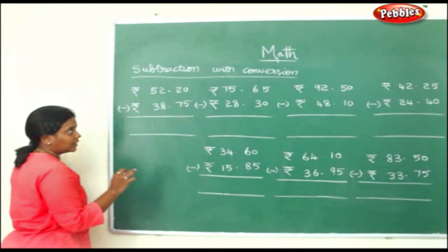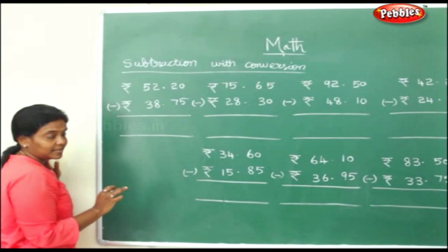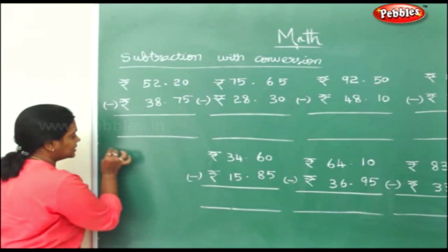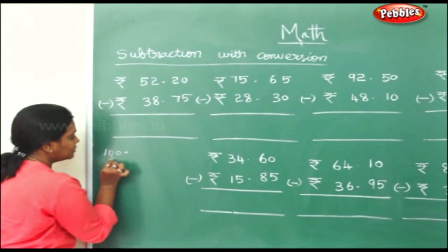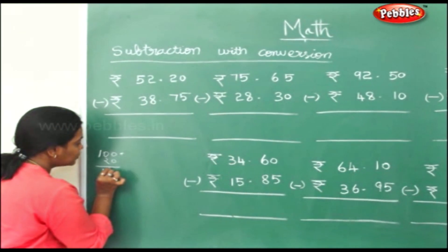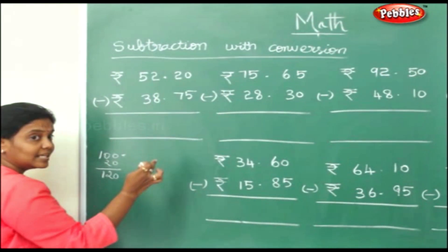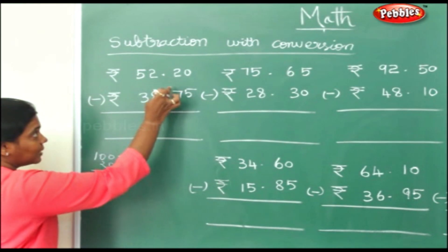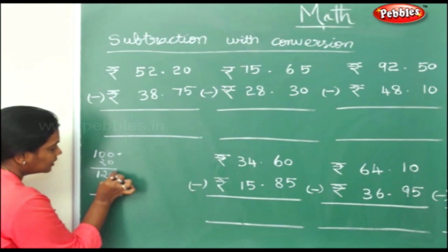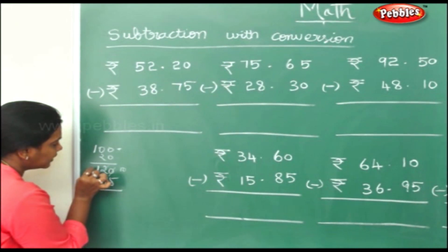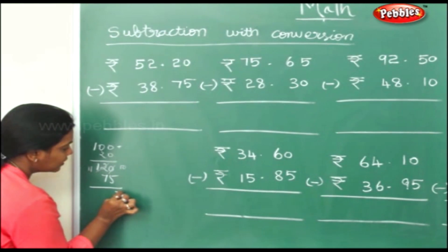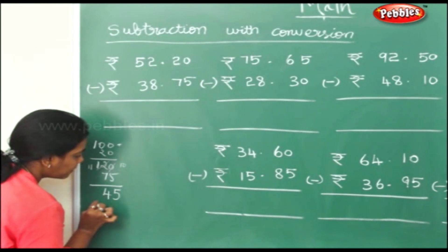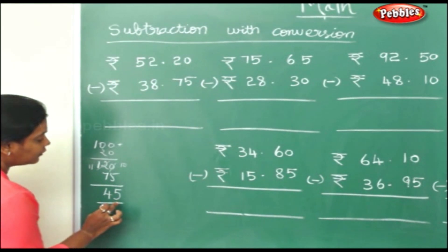See 20 minus 75. You cannot take 20 paise minus 75 paise, so we will borrow 1 rupee. 1 rupee is 100 paise, so 100 paise plus 20 paise will be 120 paise. Now 120 paise can be minused by 75 paise. So 120 minus 75: 10 minus 5 is 5, and 11 minus 7 will be 4. So this is 45 paise.